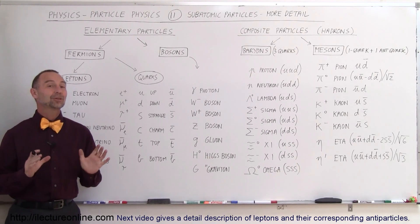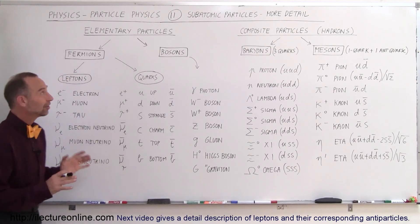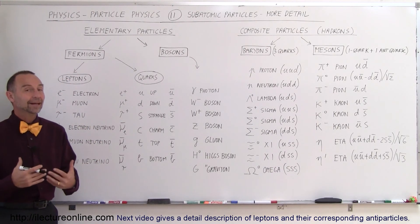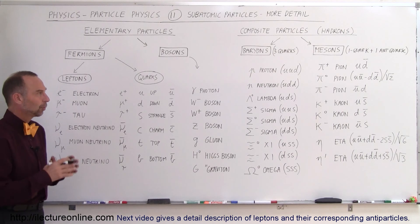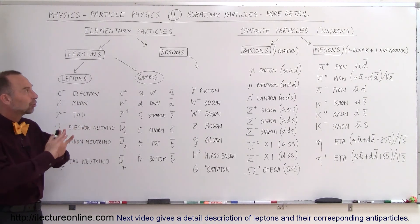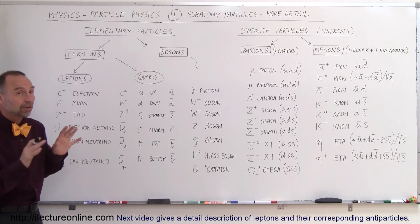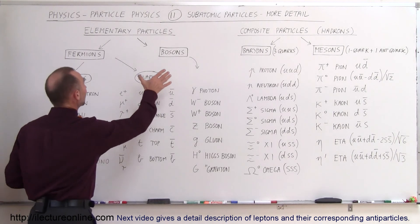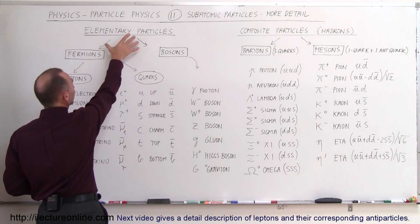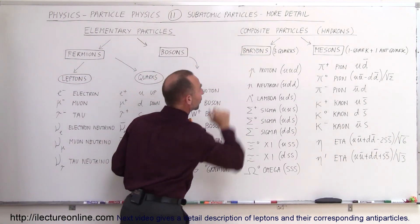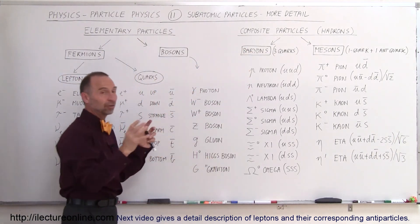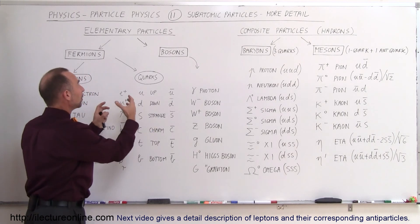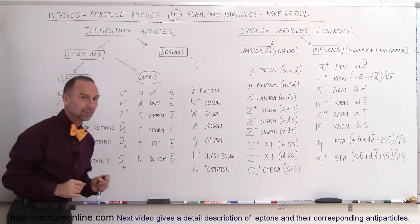Welcome to Ad Lecture Online. Now we're going to take a look at the subatomic particles in more detail. Here we're laying out the general structure of subatomic particles into two main categories: the elementary particles and the composite particles. The composite particles are made up of a number of elementary particles.